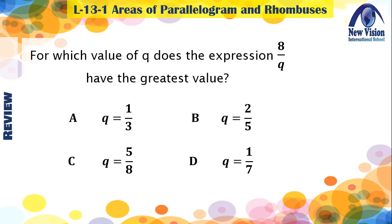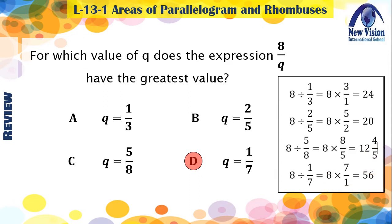The correct answer is q equal to 1 over 7. Let's consider all the choices. Choice A: q = 1/3 gives 8 ÷ 1/3 = 8 × 3 = 24. Choice B: q = 2/5 gives 8 × 5/2 = 20. Choice C: q = 5/8 gives 8 × 8/5 = 12 and 4/5. Choice D: q = 1/7 gives 8 × 7 = 56. From all these answers, 56 is the greatest value, so our answer is q equal to 1 over 7.